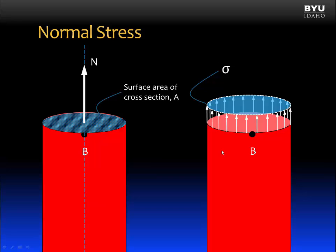We can write an equation for sigma in an axially loaded member as simply the internal resultant force divided by the cross sectional area. Let's talk about the units for normal stress. N is a force and A is an area. In U.S. customary units, the force is usually going to be in units of pounds and the area is typically in inches squared.